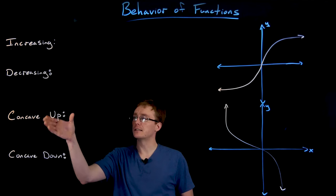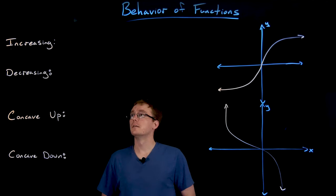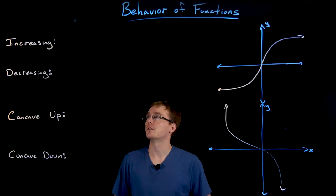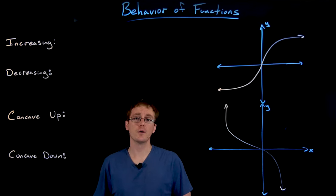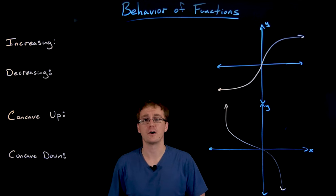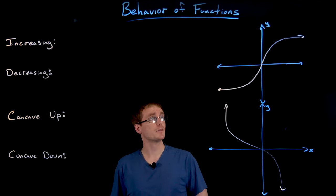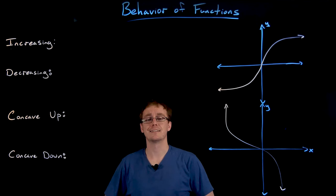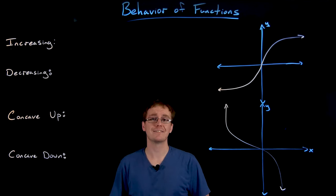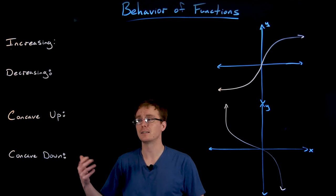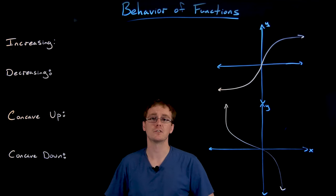We're going to talk about what it means to be increasing, decreasing, concave up, and concave down. Informally, if we say a function is increasing on some interval, that means the function is going up as we move from left to right on that interval. Decreasing means the function is going down as we move from left to right. The first function graphed is increasing throughout its entire domain and the second is decreasing throughout its entire domain.